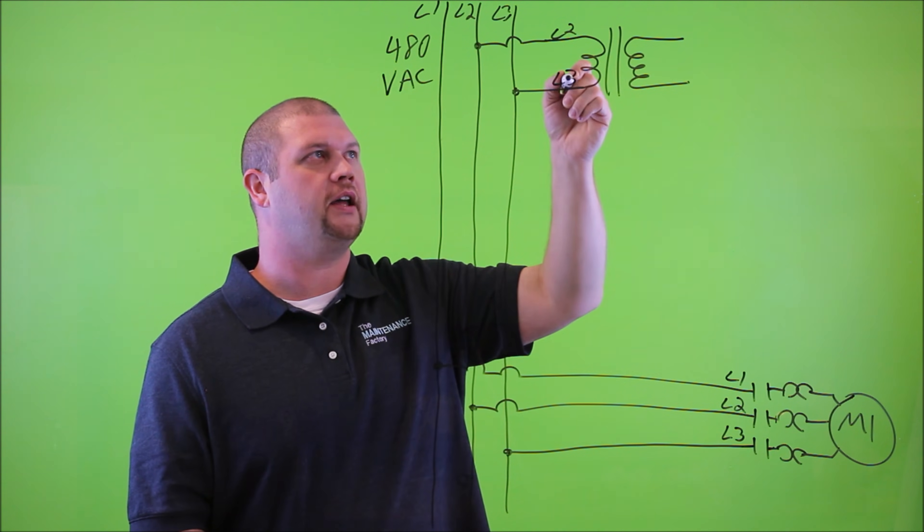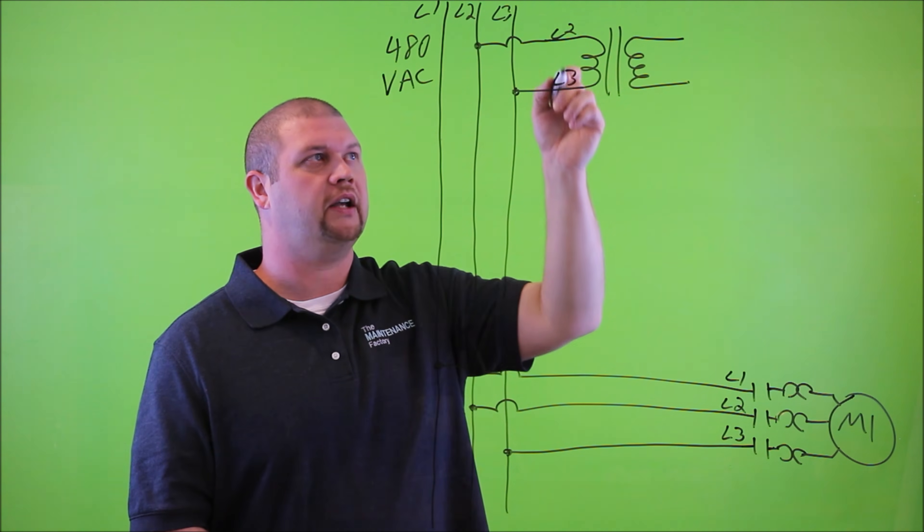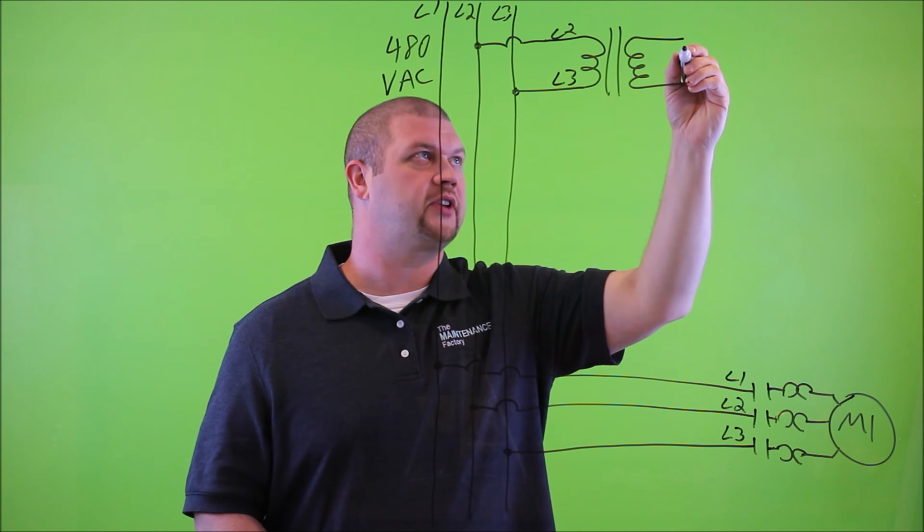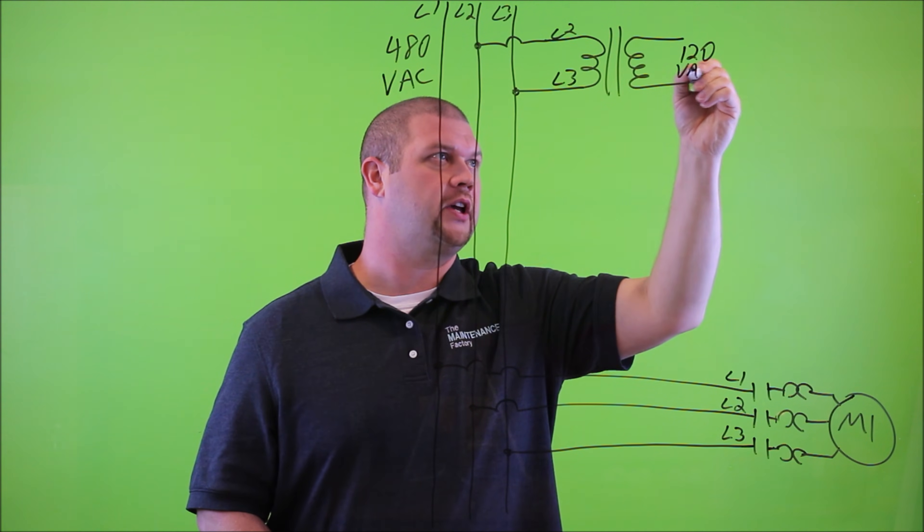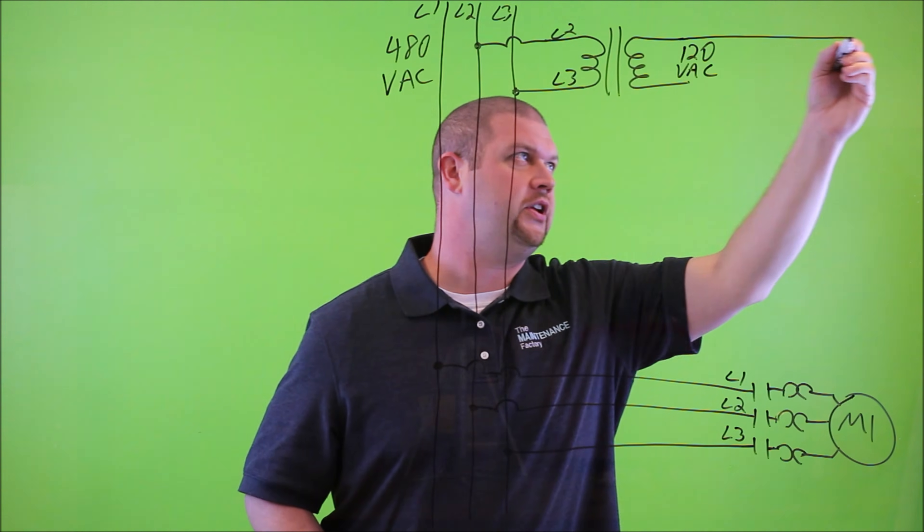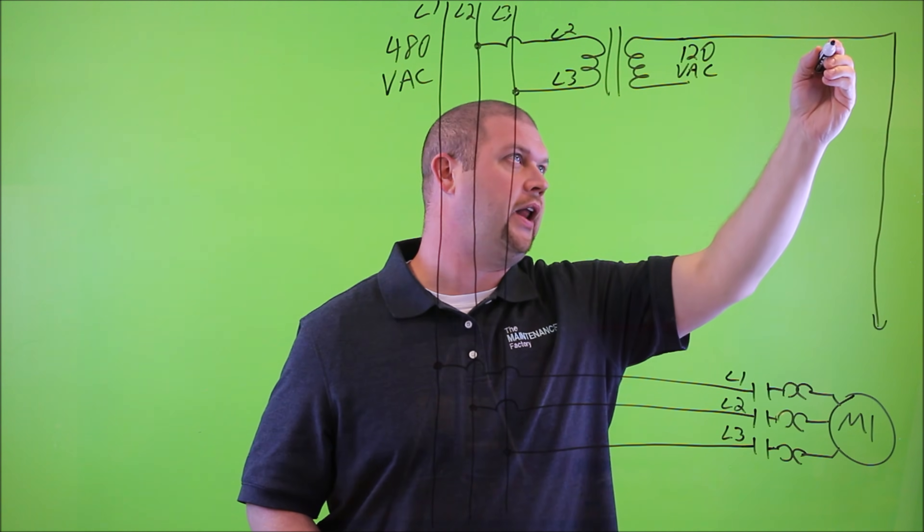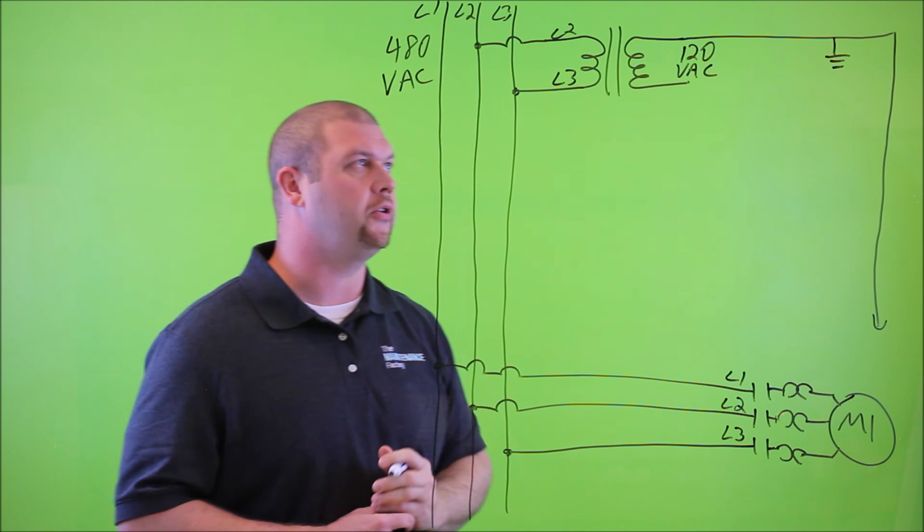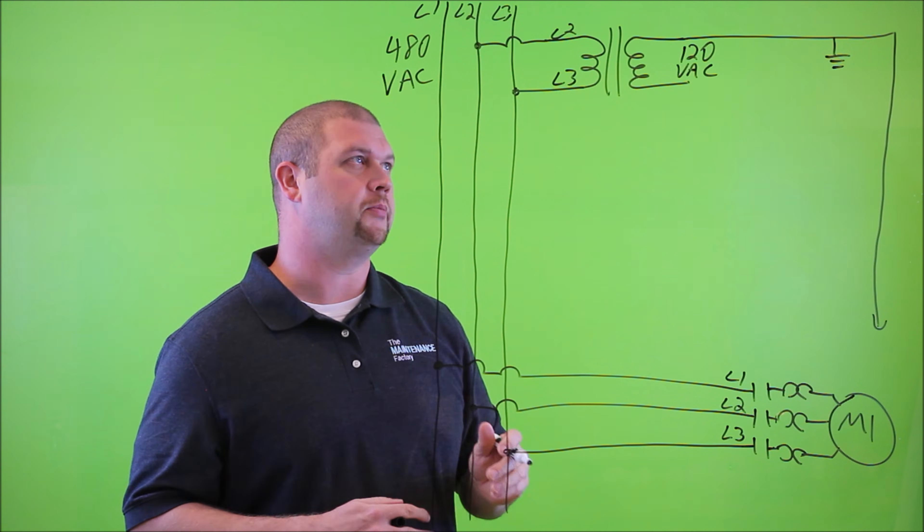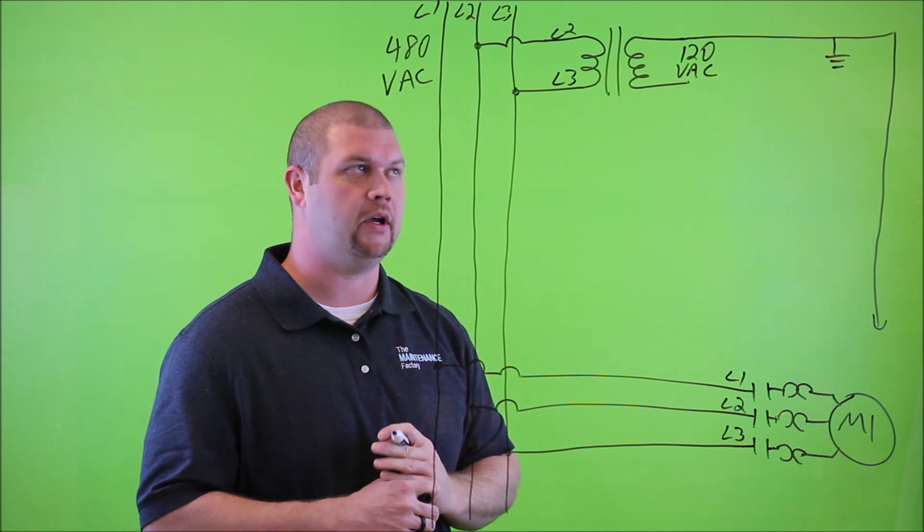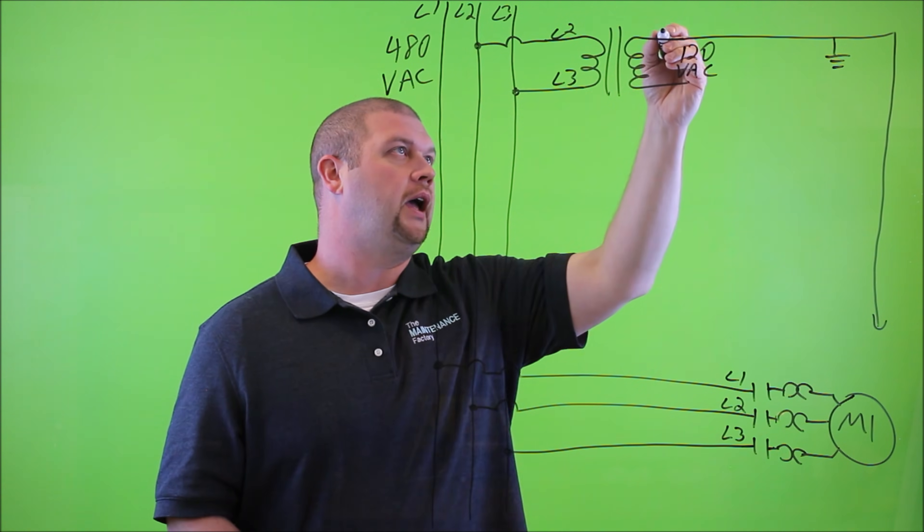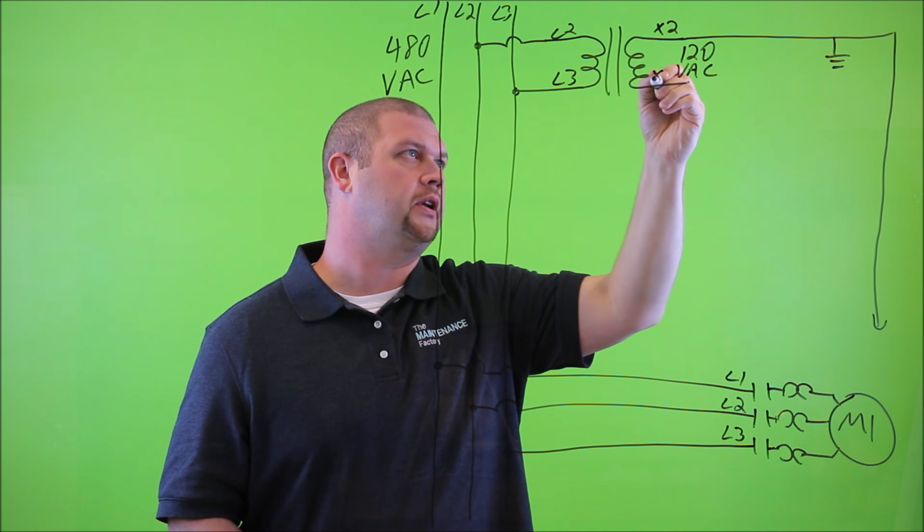So let's continue on by drawing a control transformer. And we're going to connect it to L2 and L3. On the line side, or the primary side of this transformer, it's connected to L2 and L3, which will be 480 volts AC. On the secondary side, we're going to say that steps down to 120 volts AC, which is just a little bit more user-friendly. And one side of this transformer is normally going to be grounded to the chassis or the housing of the equipment or motor starter bucket. And let's just name it X2 and X1.